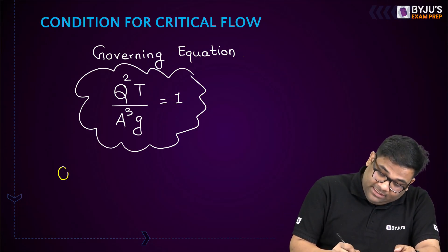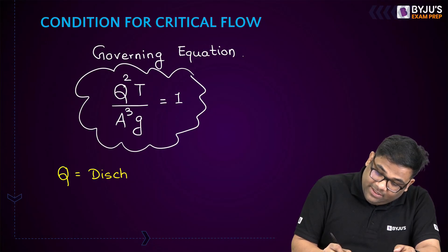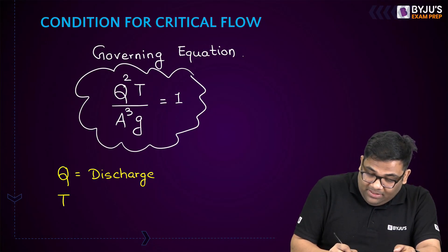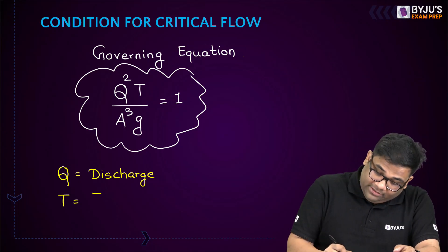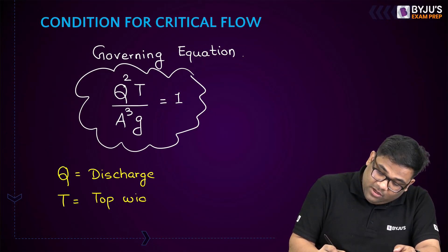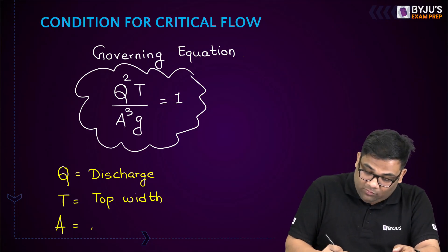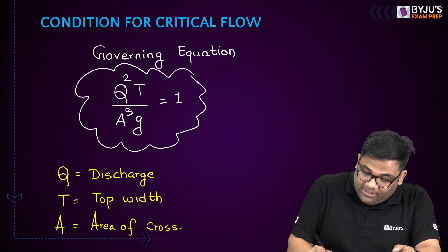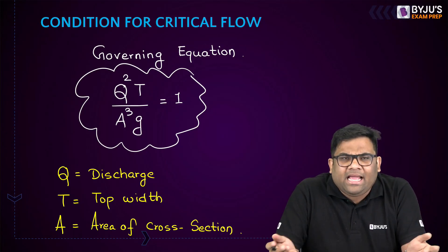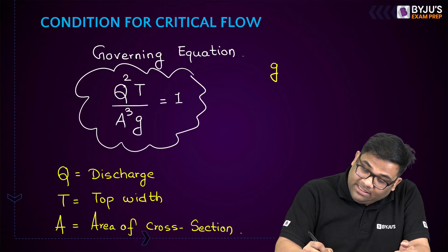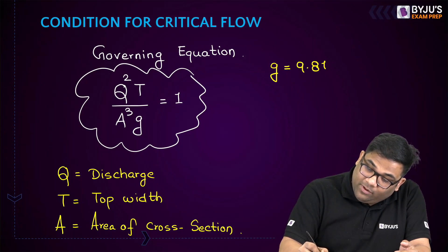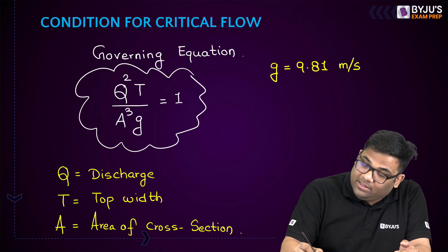The terms in this equation are: Q is the discharge; capital T is the top width of the cross-section; A is the area of cross-section; and G is the acceleration due to gravity — if nothing is mentioned, take 9.81 meters per second squared.